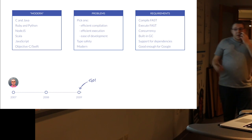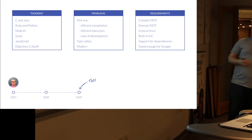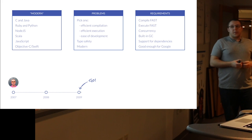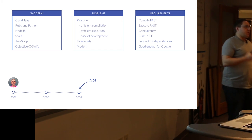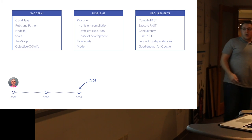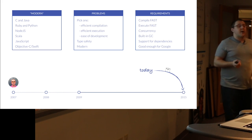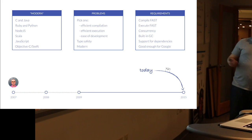2009 is the first official birthday of Go. There are reports it had been used internally before that, but that's when the official release happened. It was open source, made public, and people started using it. And now we're in 2015 and a whole lot has happened both in computing and in the Go programming language since then.